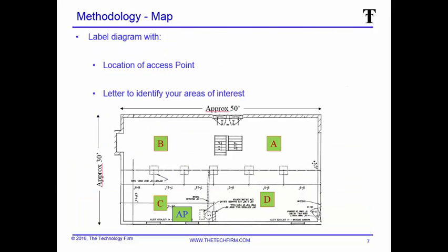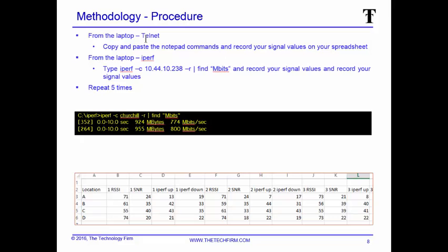Here are two screenshots of what I was talking about. Over here we have our floor plan; I identified the areas of interest. The access point is down in the bottom left, and I've got three areas I want to document — just give each one a letter, it doesn't have to be fancy. From the laptop, we Telnet in, copy and paste those commands, and record the signal stats. Then from the laptop I also do an iPerf test to the phone, and repeat five times — because it's wireless, one moment it's good and the next it's not.